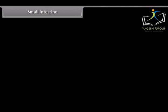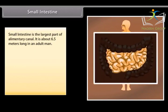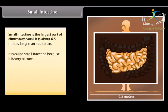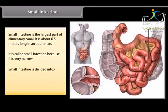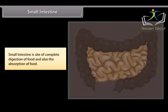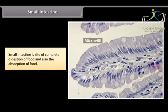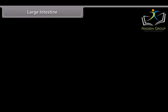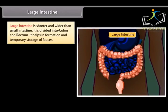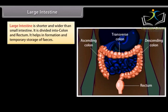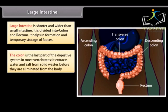The small intestine is the largest part of the alimentary canal, about 6.5 meters long in an adult. It is called 'small' because it is narrow. It is divided into duodenum, jejunum, and ileum, and is the site of complete digestion and absorption of food. The large intestine is shorter and wider than the small intestine, divided into colon and rectum, and helps in formation and temporary storage of feces. The colon extracts water and salt from solid wastes before elimination.